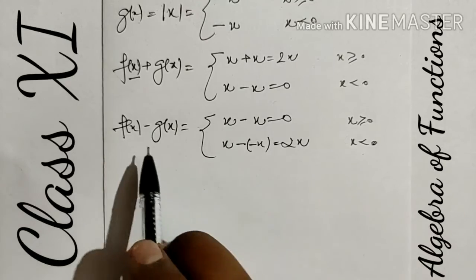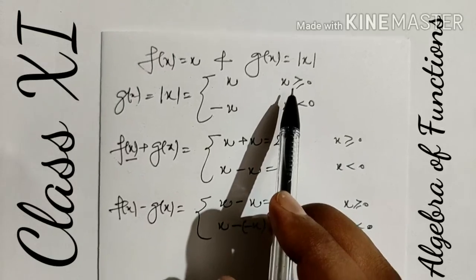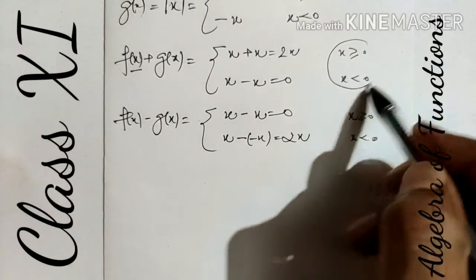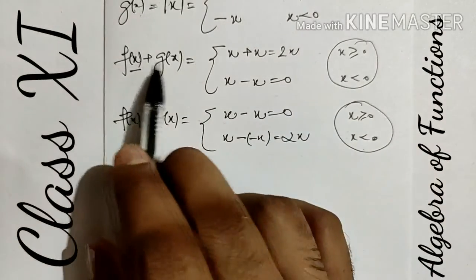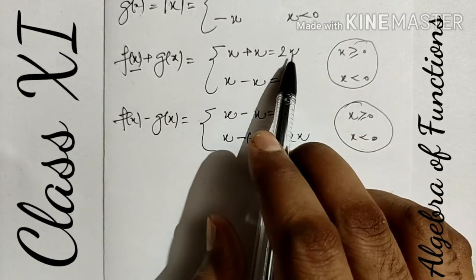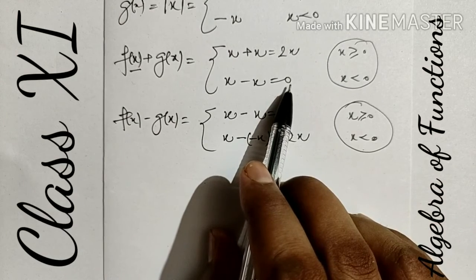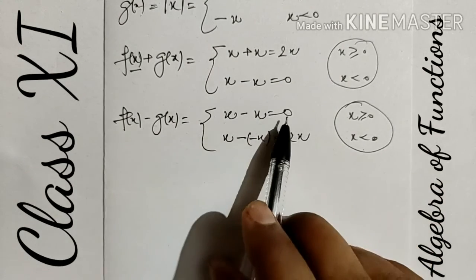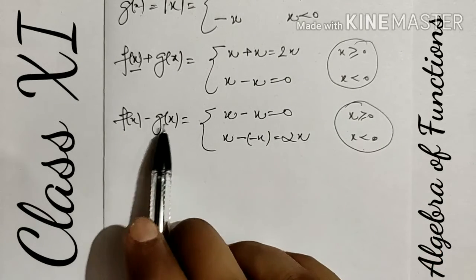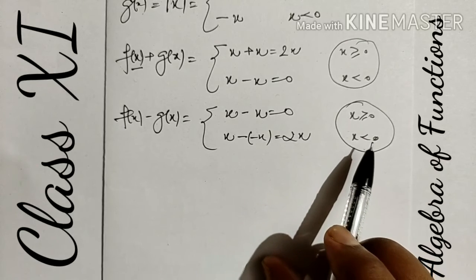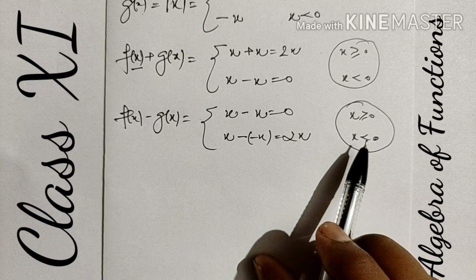Like this, we can make the grouping of functions when two functions are given. The domain of the function is real numbers. The range of the function: when addition process is there, for all positive values the function is given by 2x, and for x < 0 it is always 0. Same in case of difference: it becomes 0 when x ≥ 0, and 2x when x is negative. Like this, we can apply algebra of functions on the given functions with given values.